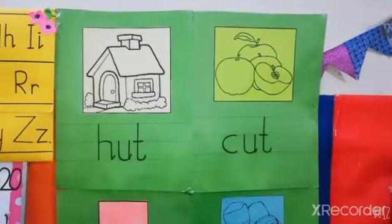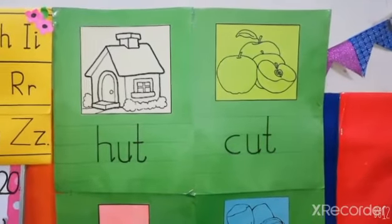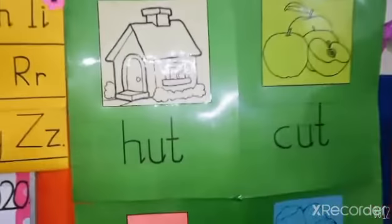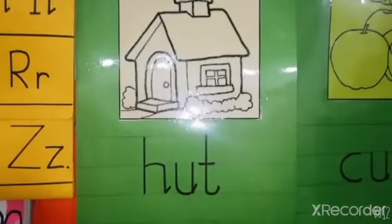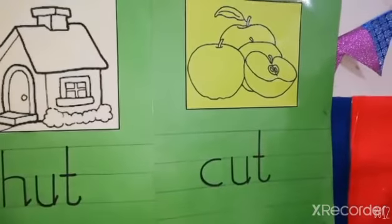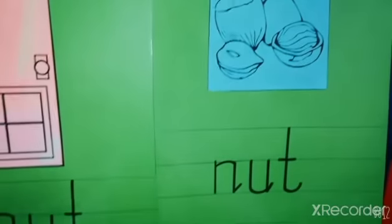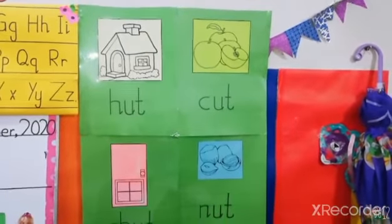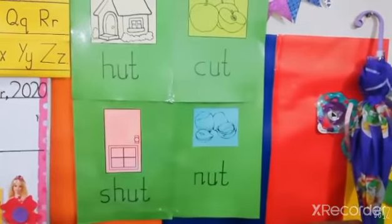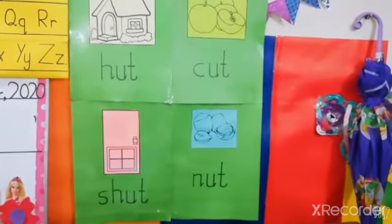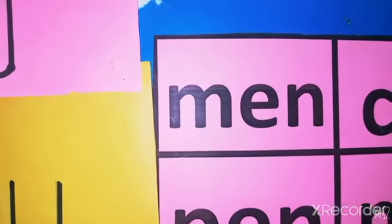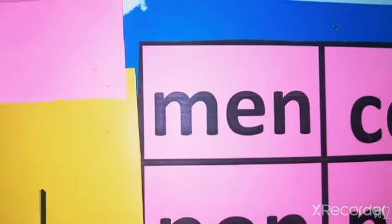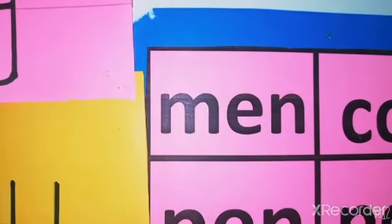UT gives the sound of 'ut'. H-U-T, hut. C-U-T, cut. S-H-U-T, shut. N-U-T, nut. Hut, cut, shut, nut.